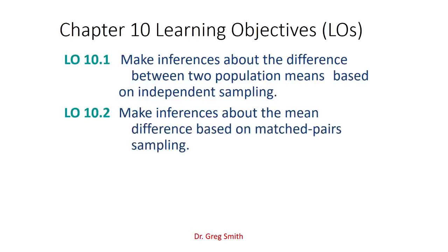The next topic will be inference based on something called matched pairs. This matched pair sampling is a pretest-posttest approach where we focus on one object — for example, whether there's a pretest-posttest effect, or a particular appraiser appraising a house, or one person appraising two separate houses. We're looking at one point of reference and examining a before-and-after difference to see if there's an inherent difference happening.